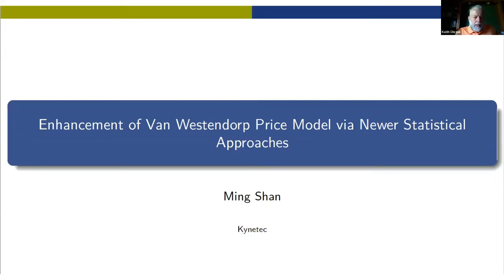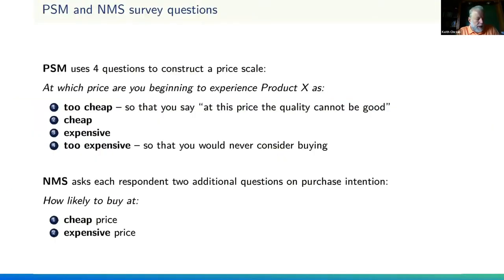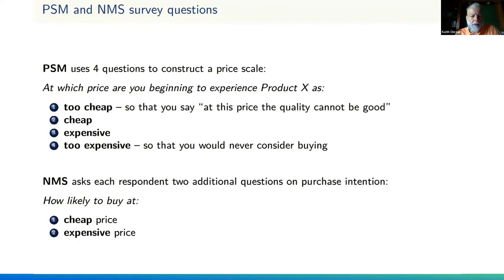This paper comes from Ming Shan at Kinetic, about the Van Westendorp price sensitivity model and applying new statistical methods. The Van Westendorp PSM involves four questions: at what price do you experience product X as too cheap, cheap, expensive, or too expensive? Van Westendorp was a Dutch economist, and it's a somewhat naive version of a pricing model. A few years back, Newton Miller Smith added two additional purchase intention questions that turned it into a volumetric pricing model — a valuable addition. Ming is going to add further suggestions on top of that.